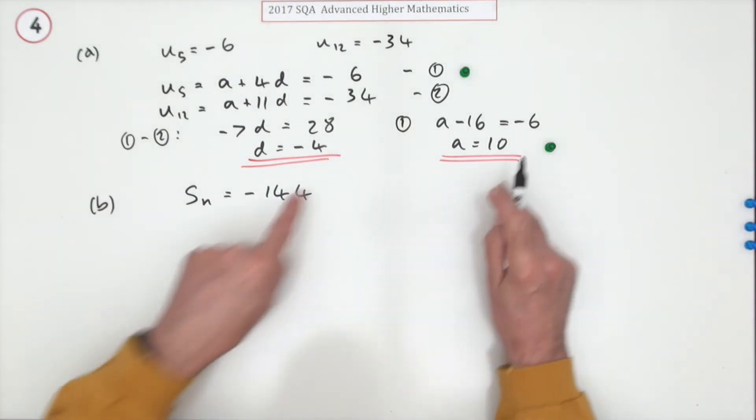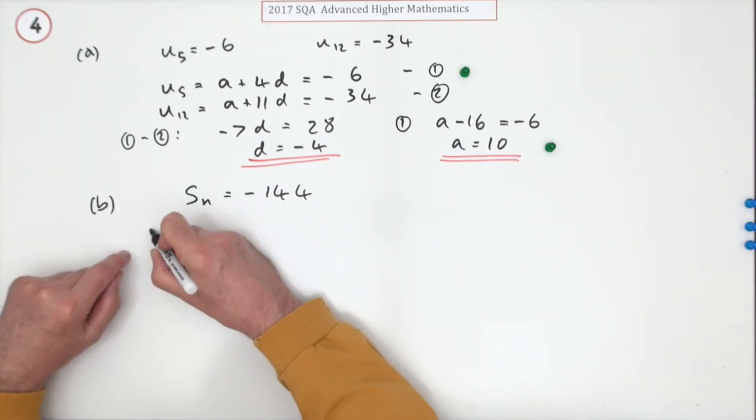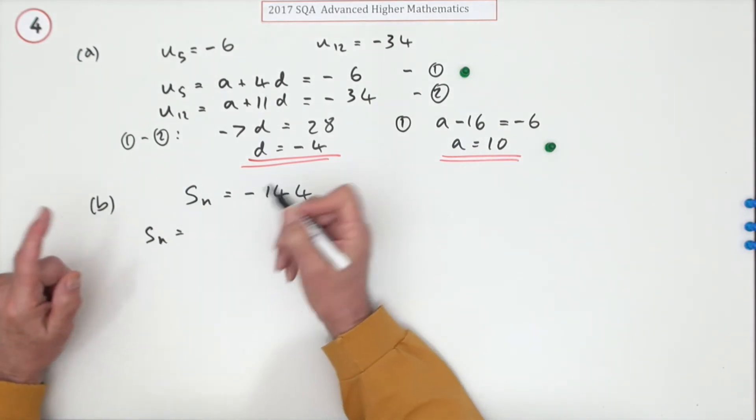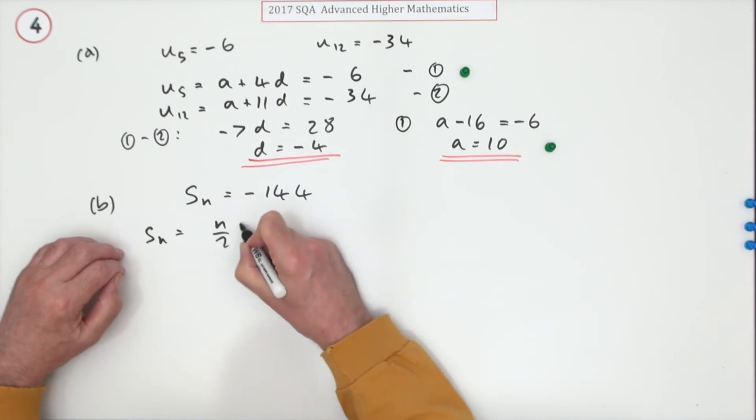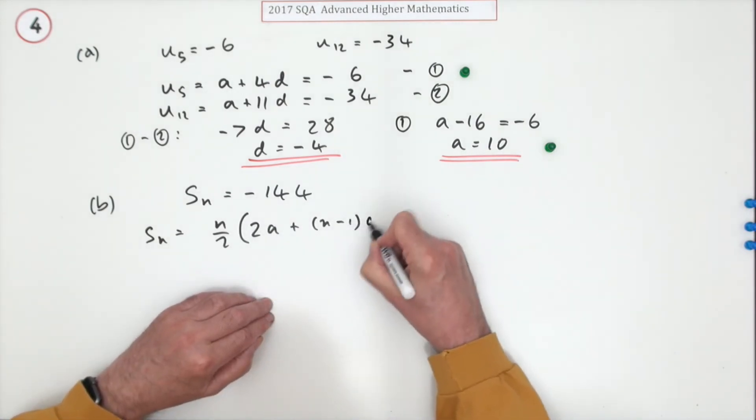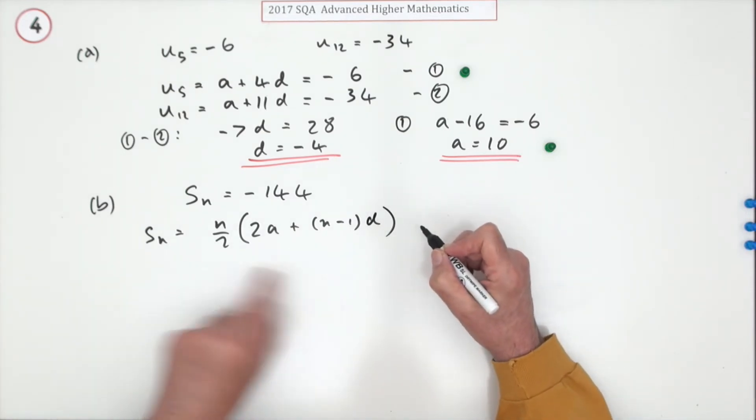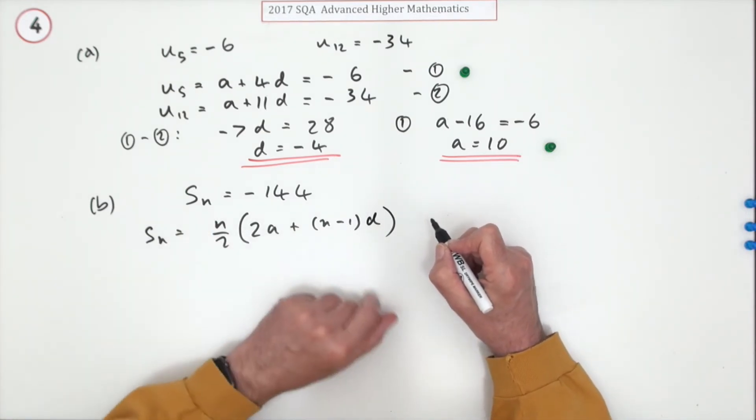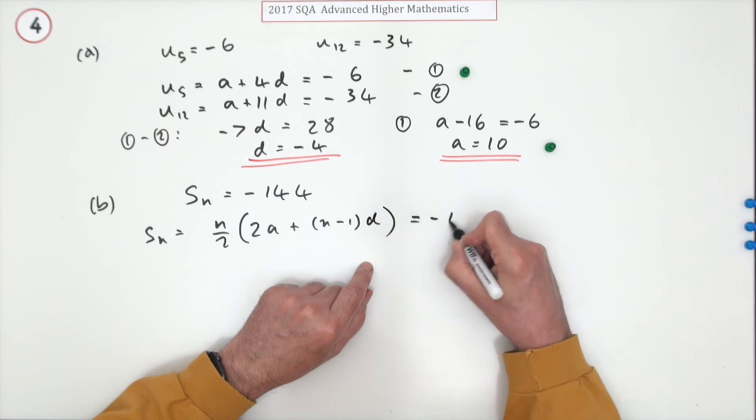So you just write that down. In fact, in writing that down and putting these two numbers into it, you're going to get a mark. s of n was, as you're meant to know, n upon two times two a plus n minus one lots of d. It's only the average of the first one, n times the average of the first and last terms.